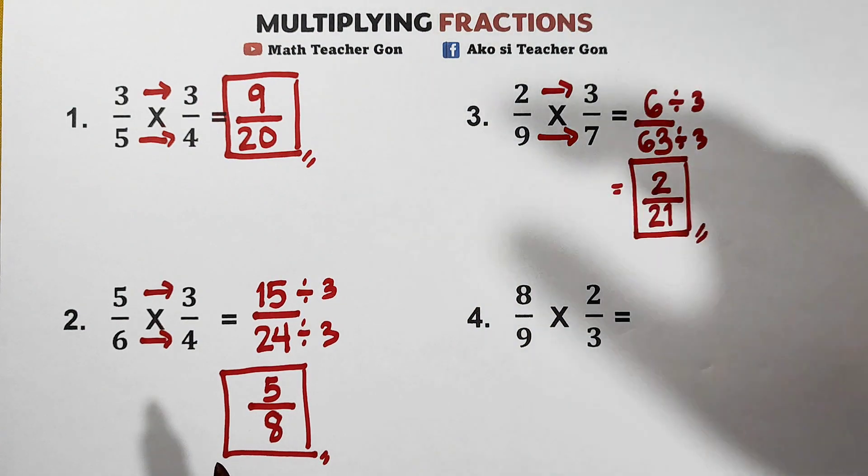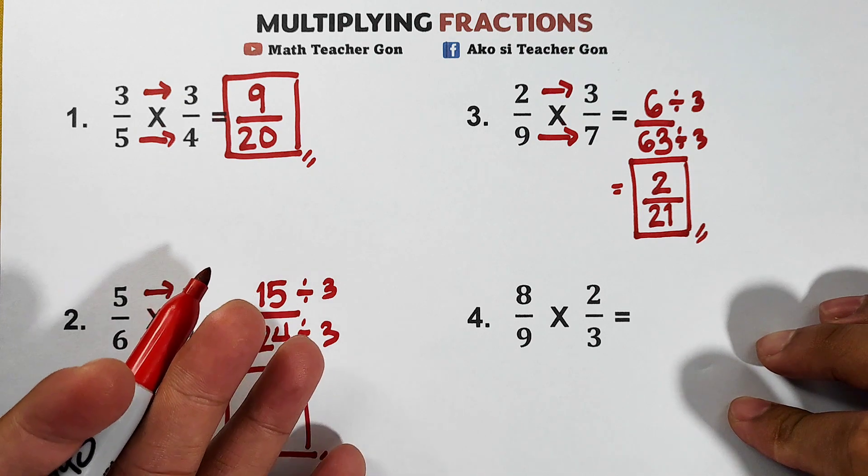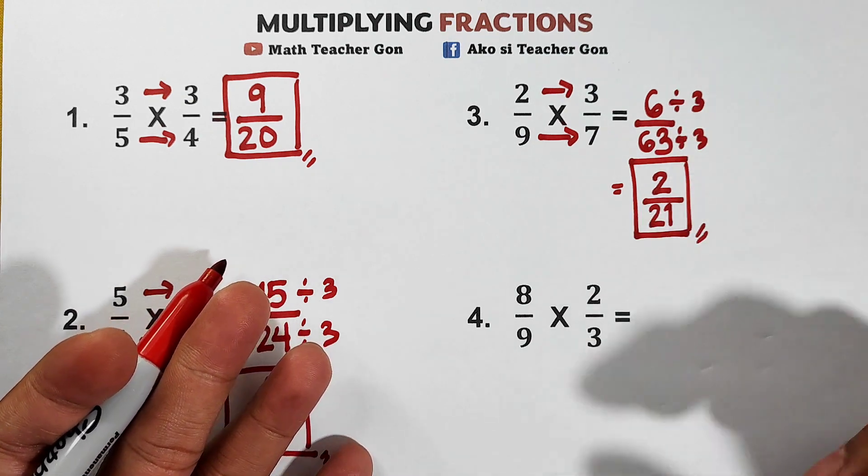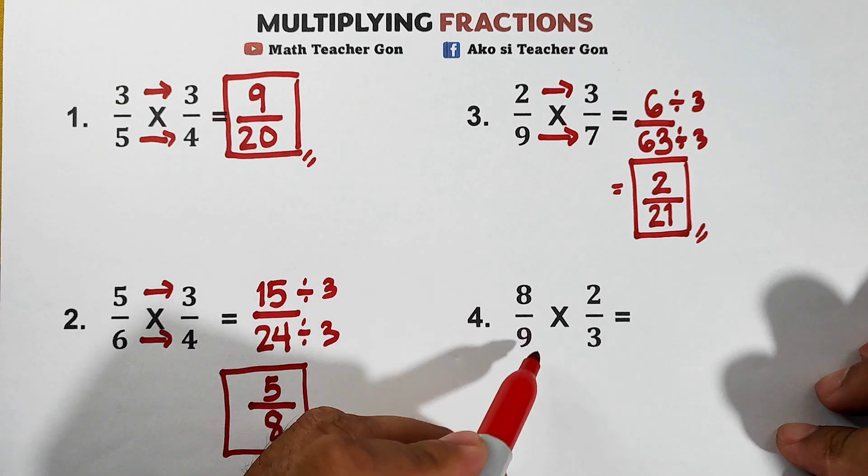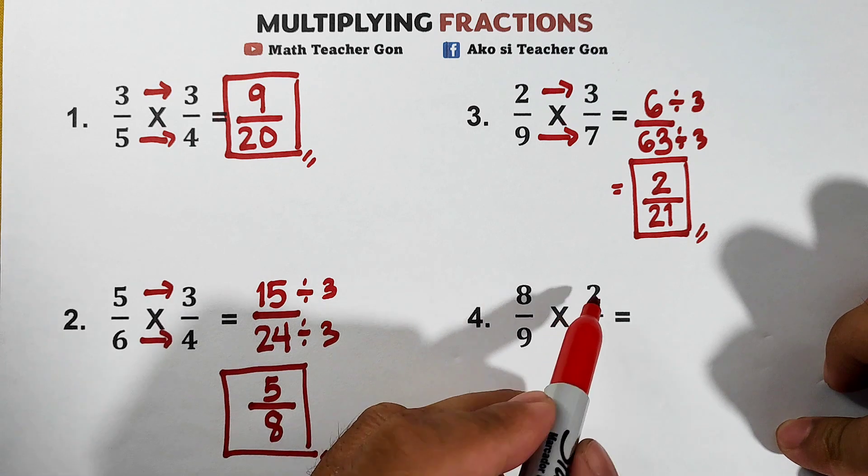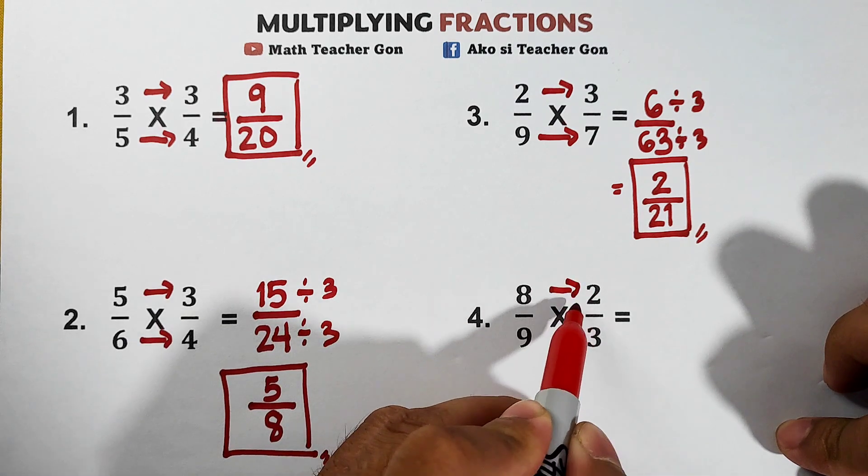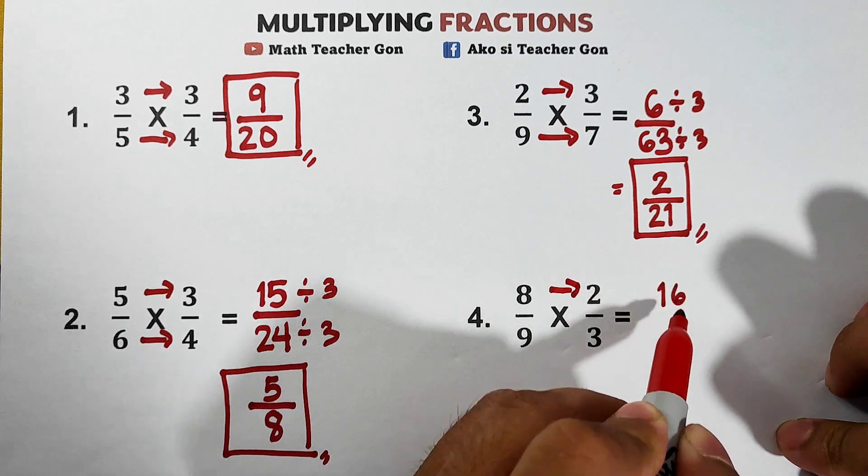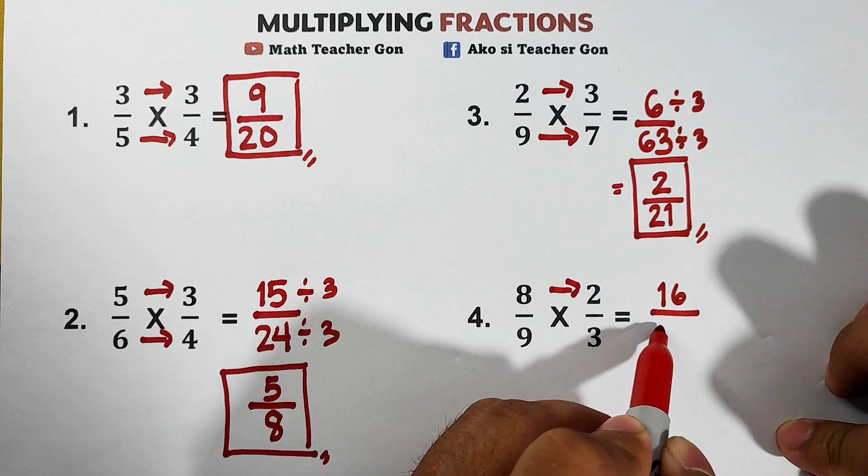As you can see, what you need to do is multiply the numerators, multiply the denominators, and express your answer in lowest terms. Let's have the last item. For the last item we are given 8 over 9 times 2 over 3. Multiply these numbers, 8 times 2 is 16 over 9 times 3 which is equal to 27.